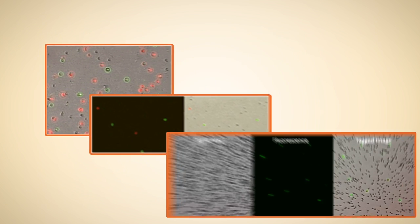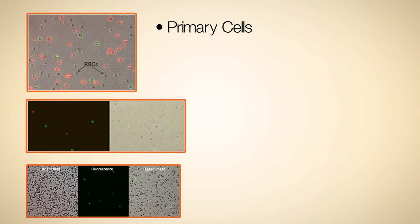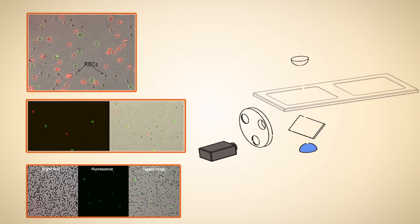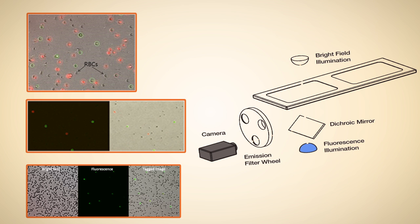For cell lines that are difficult to analyze with conventional cell counters, such as primary cells, blood cells, and PBMCs, the integrated dual fluorescent microscope optics enable sensitive and quick analysis.